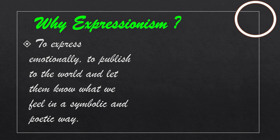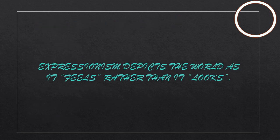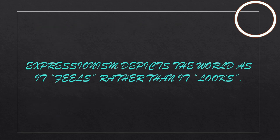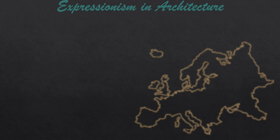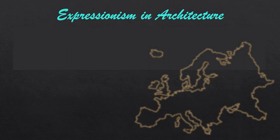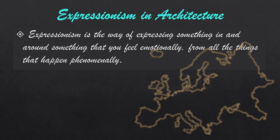To express emotionally — to publish to the world and let them know what we feel in a symbolic and poetic way. Expressionism depicts the world as it feels rather than as it looks. Expressionism is the way of expressing something from all the things that happen phenomenally, conveying what one feels emotionally.